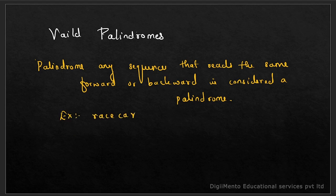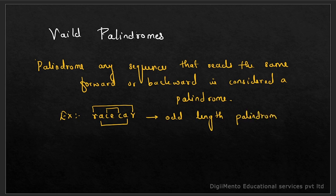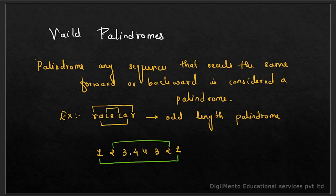If we look at 'race car', reading it forward and backward gives the same result — this is an odd-length palindrome. Palindromes can be in alphabets but also in numbers, like 1 2 3 4 4 3 2 1. Here, 1 pairs with 1, 2 with 2, 3 with 3, and 4 with 4.